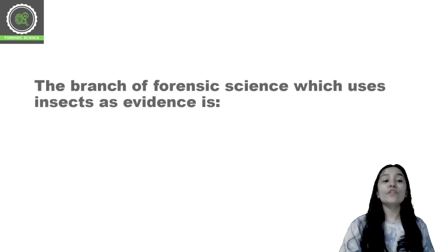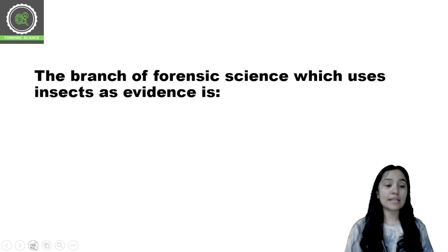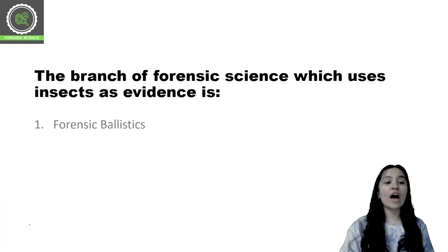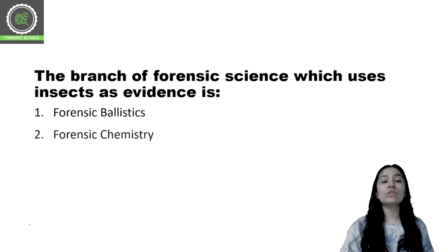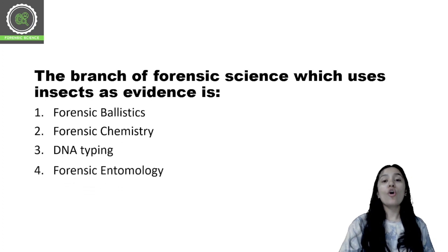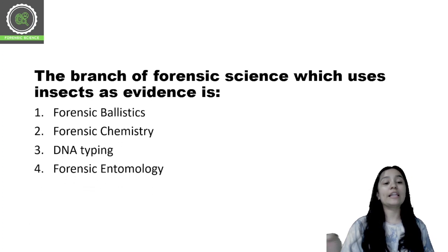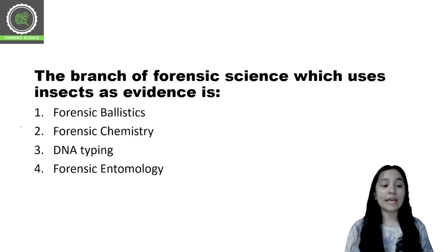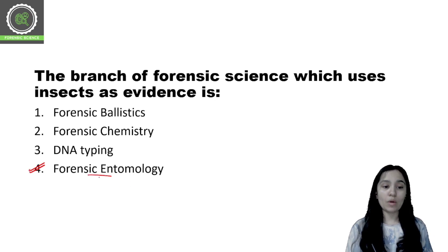Question number 1: The branch of forensic science which uses insects as evidence — which branch is this? You have four options. You can pause the video if you need more time, or else select your answer. The correct answer is option 4: forensic entomology.